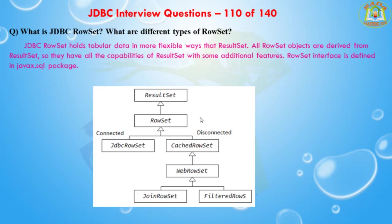The second type is the disconnected RowSet object. These RowSet objects are not required to connect with the database, so they are more lightweight and serializable. They are suitable for sending data over the network. There are four types of disconnected RowSet implementations. The first one is CachedRowSet — it can get the connection, execute the query, and read the ResultSet data populated into the RowSet.